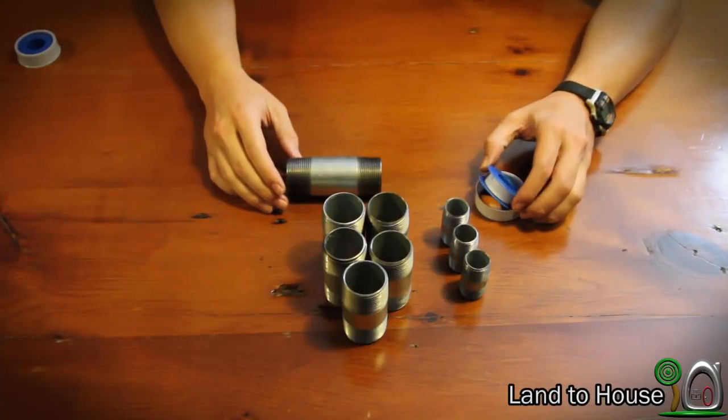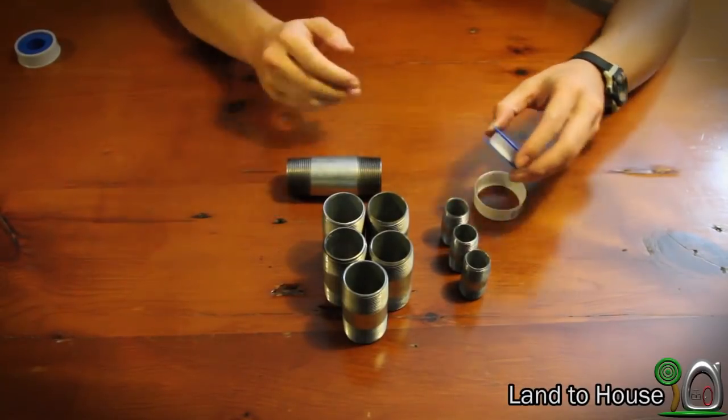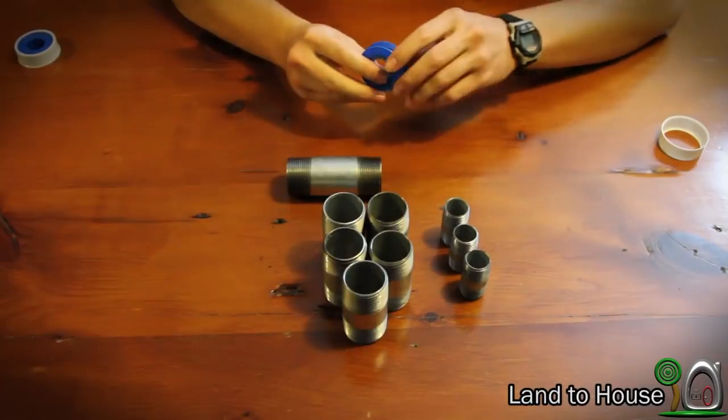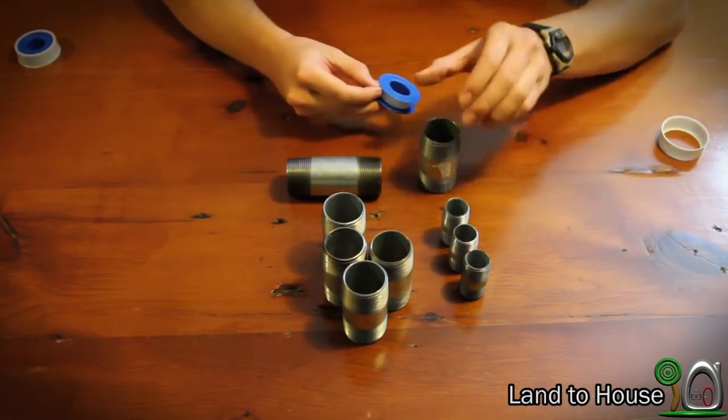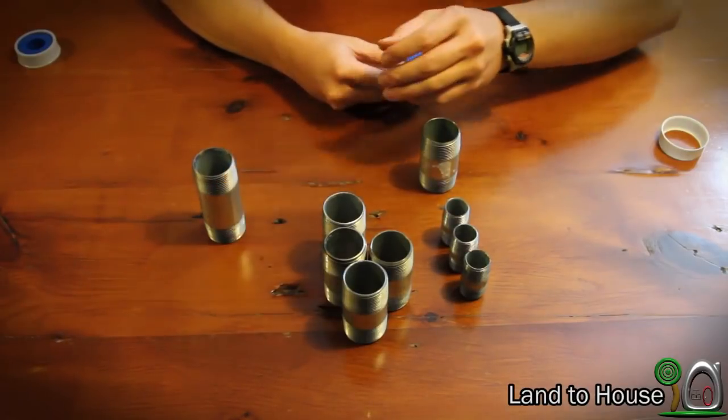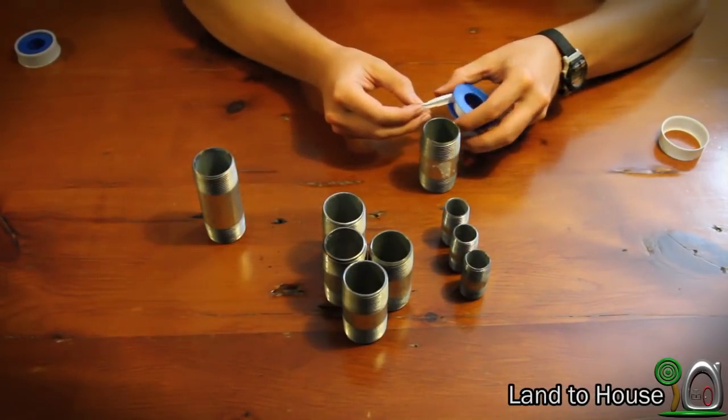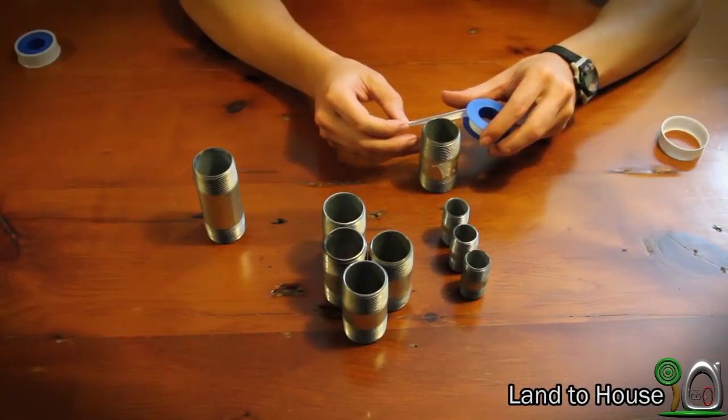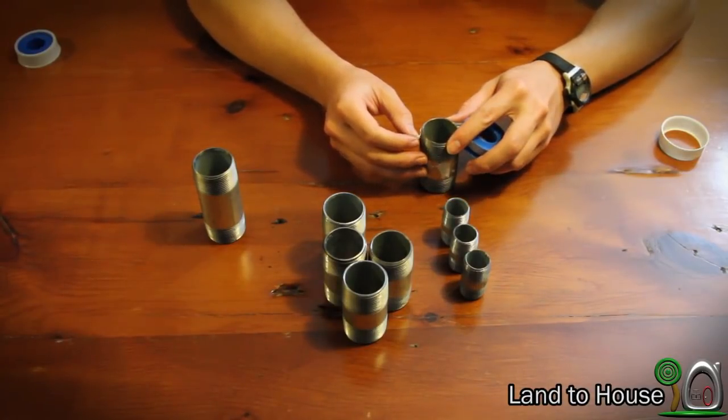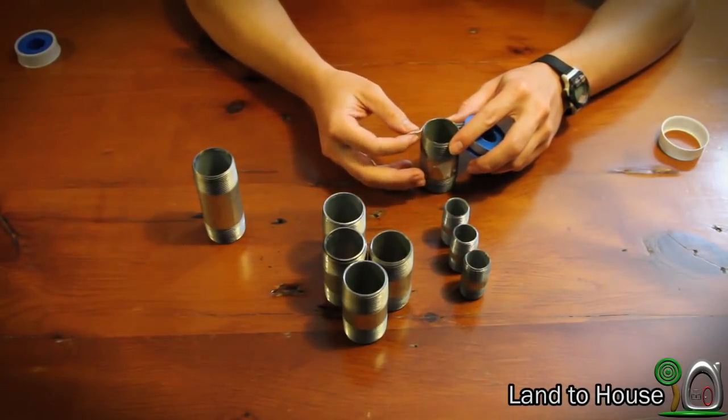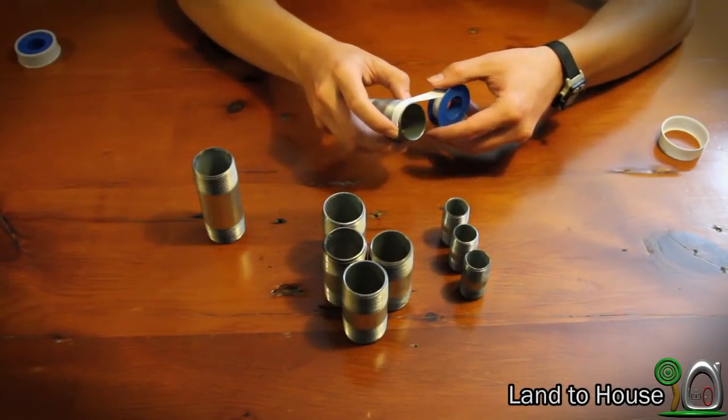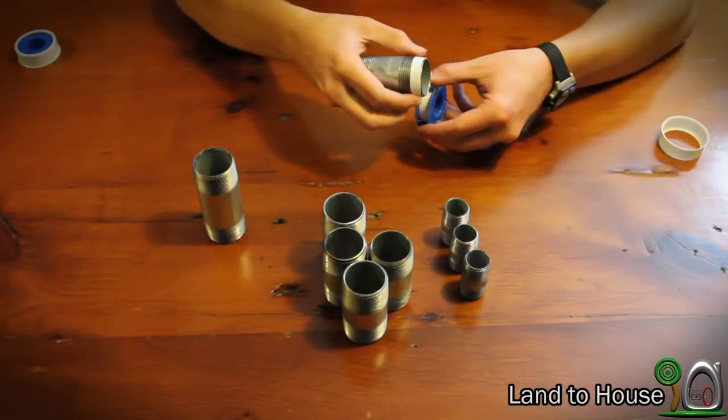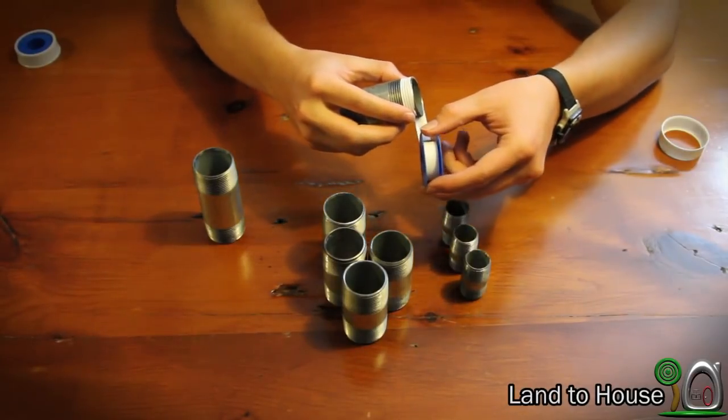Step 2. Take your Teflon tape, or pipe tape, and wrap each of these pipe nipples at least four times. You want this to be on here securely so that whenever these pipes are connected, they're going to make an air tight and water tight seal. So if it takes several wraps, it's okay.